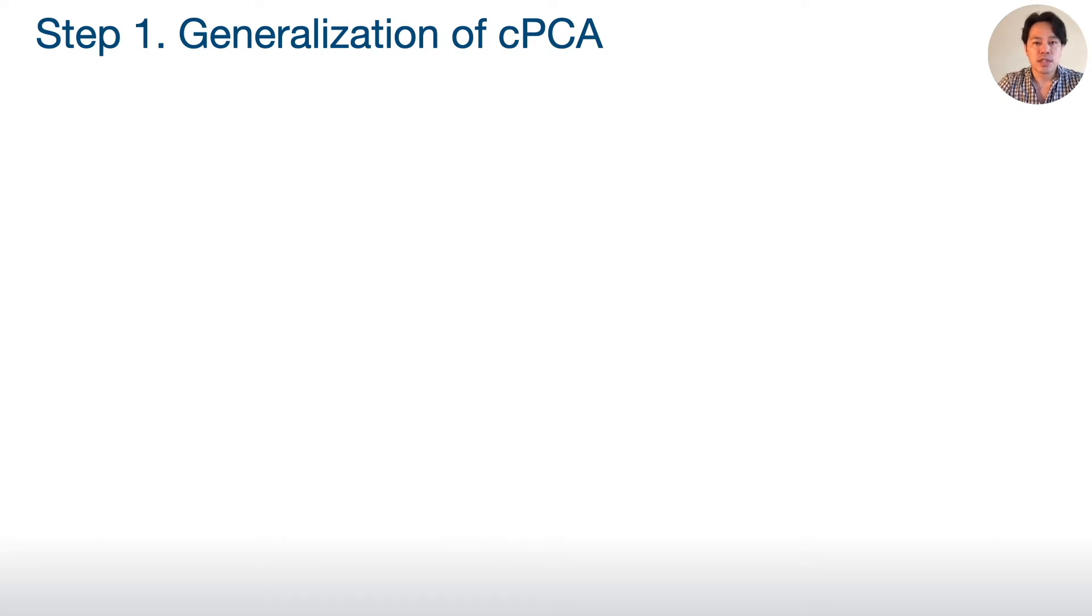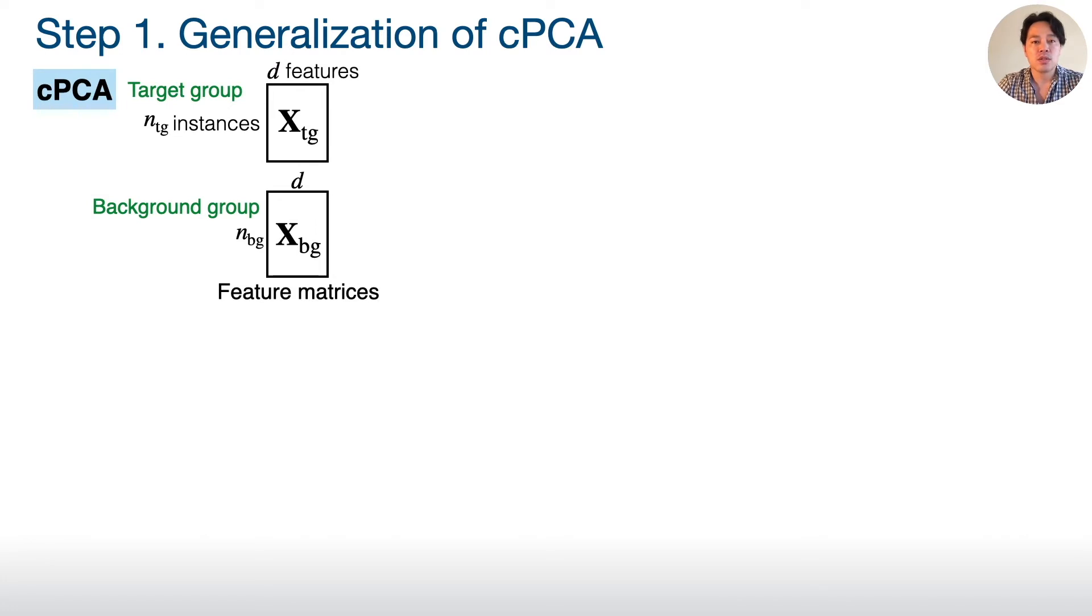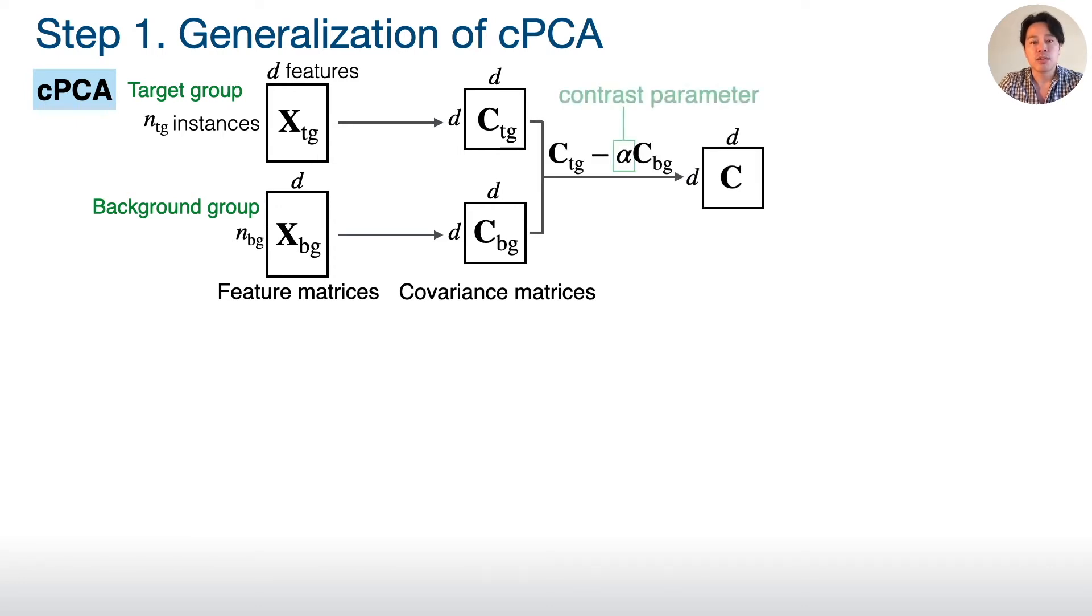The first step is generalization of CPCA. CPCA takes two feature matrices corresponding to target and background groups and computes a covariance matrix for each group to obtain variance information.